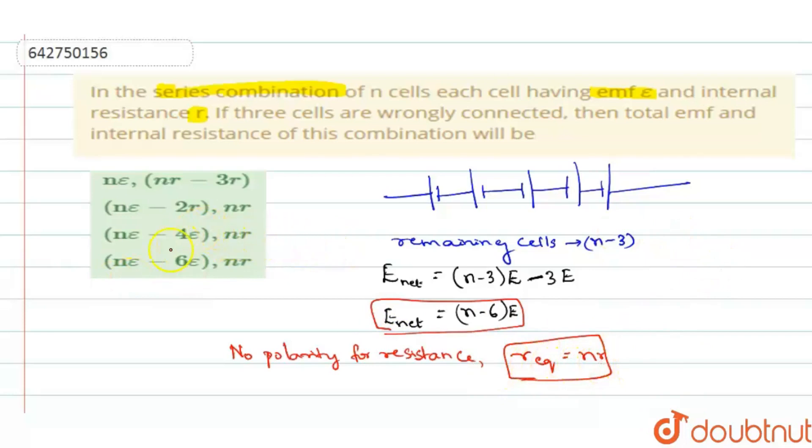Now see which option you have. See, NE minus six E comma NR, which means option four is the right answer.